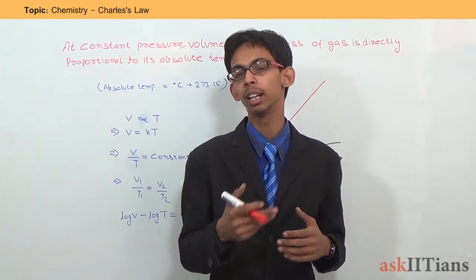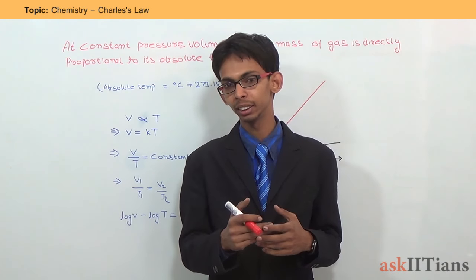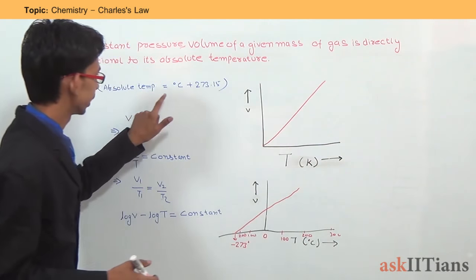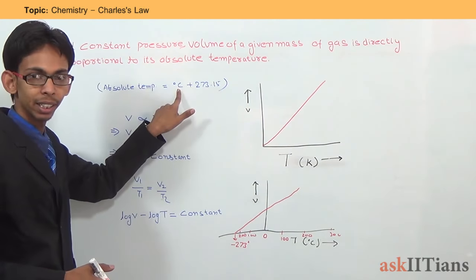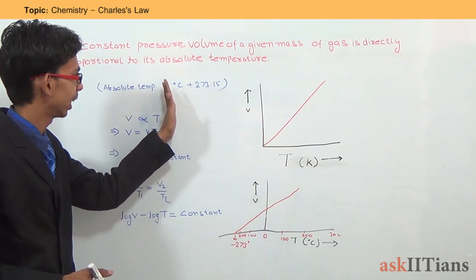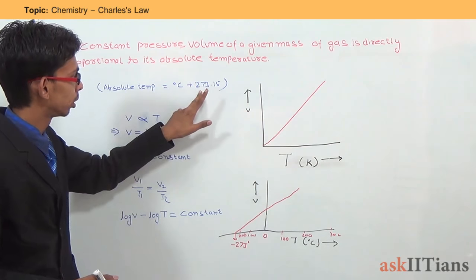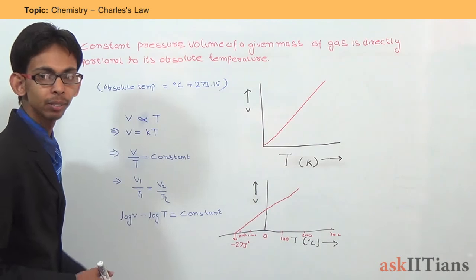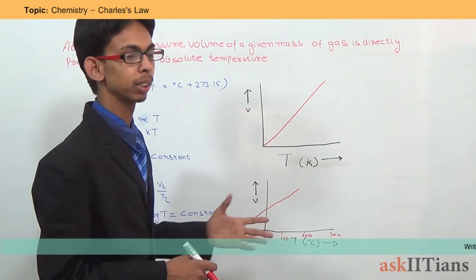How do we convert temperature from degree Celsius to Kelvin? It is very easy — just add 273.15 to the temperature in degree Celsius. For example, if it is 50 degree Celsius, just add 50 to 273.15 and you will get the temperature in Kelvin, which is the absolute temperature.